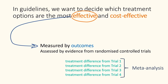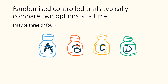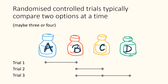We search for trials that looked at treatments for the outcome, and we combine this evidence on the treatment differences in a meta-analysis. Whilst randomized controlled trials typically compare two treatments at a time, we are interested in knowing all the treatment differences, including those between treatments that haven't been directly compared in a head-to-head trial.